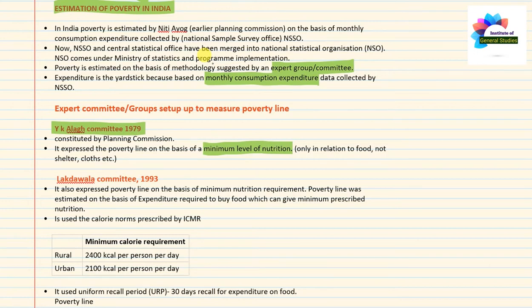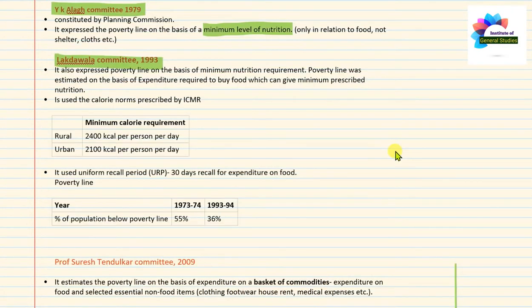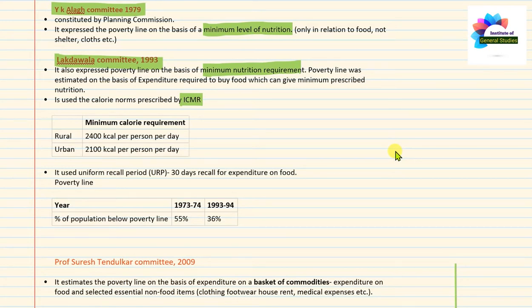The next important committee was the Lakdawala Committee in 1993. It also expressed the poverty line on the basis of minimum nutrition requirement. The poverty line was estimated on the basis of the expenditure required to buy food which can provide the minimum prescribed nutrition. It used calorie norms prescribed by the Indian Council for Medical Research. The Lakdawala Committee similarly focused on the minimum nutrition requirement.